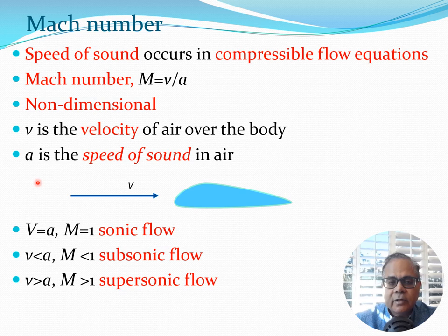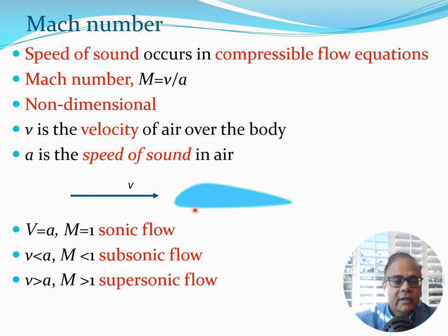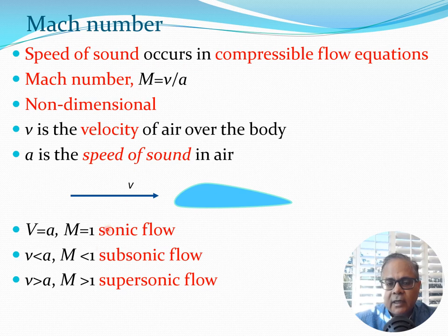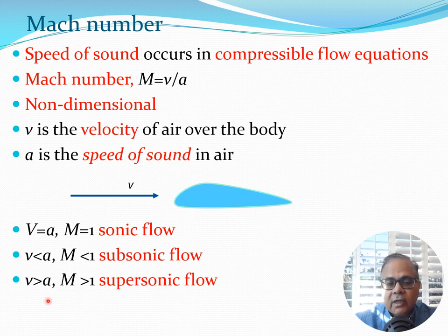The nomenclature is simple: a is the speed of sound in air. For example, if we have an airfoil section with flow coming in at velocity v, the Mach number is v/a, where a is the speed of sound at the point of calculation. When v equals a, M equals 1 — that is sonic flow. If v is less than a, then M is less than 1 — that is subsonic flow.